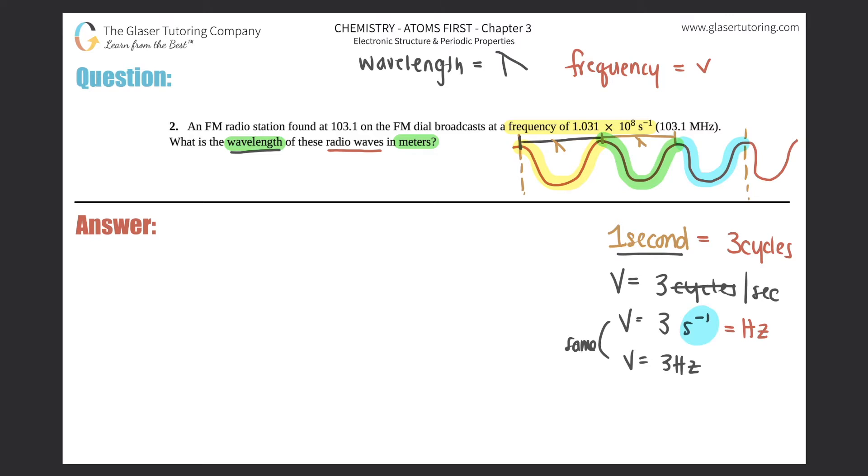To put this into context, radio waves have a frequency of 1.031 times 10 to the eighth. If I actually sat here and drew this, I mean, it would take me days, probably even months to draw that many out. Crazy. Now we just have to find out the wavelength of that frequency. And there's a formula.